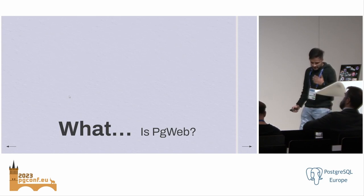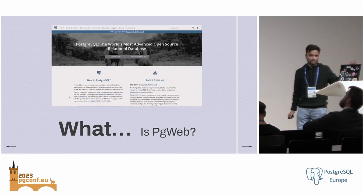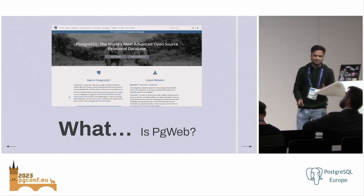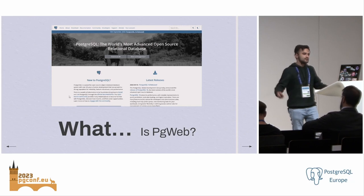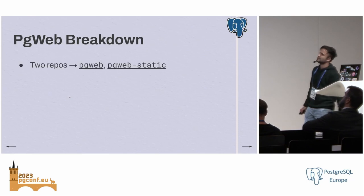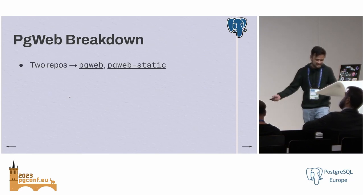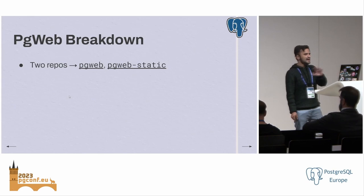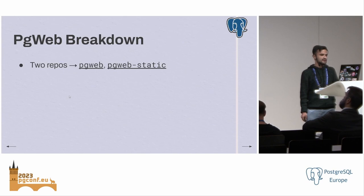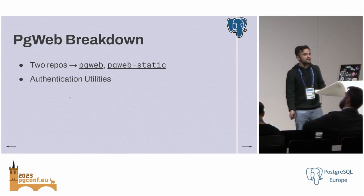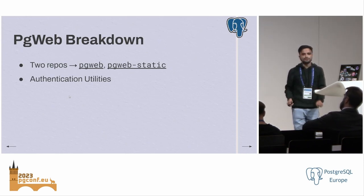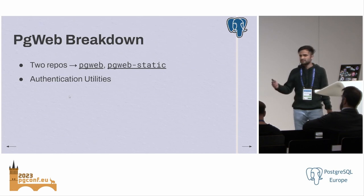So what is PGWeb? PGWeb is the codebase for our official website, PostgreSQL.org — everything about Postgres that you can know is there. The codebase is composed of two repositories: PGWeb, which contains the primary functionalities of the website, and PGWeb Static, which contains all the static content. We also have authentication utilities that are not only used on PostgreSQL.org but across most of the platforms that Postgres is hosting.